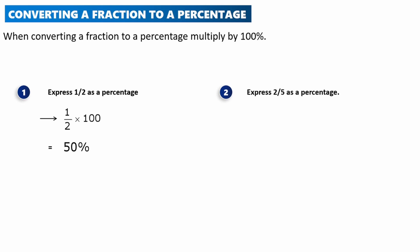Another example: express 2 over 5 as a percentage. Using the same procedure, write the fraction 2 over 5 then multiply by 100. 5 into 100 goes 20 times, so we get 2 times 20 which is 40. The final answer is 40 percent. Remember, when converting a fraction to a percentage, multiply the fraction by 100.